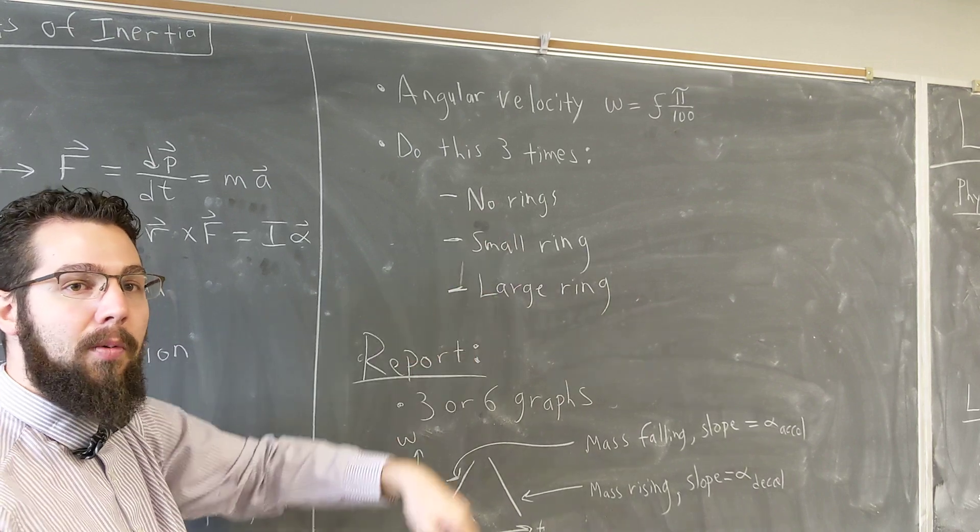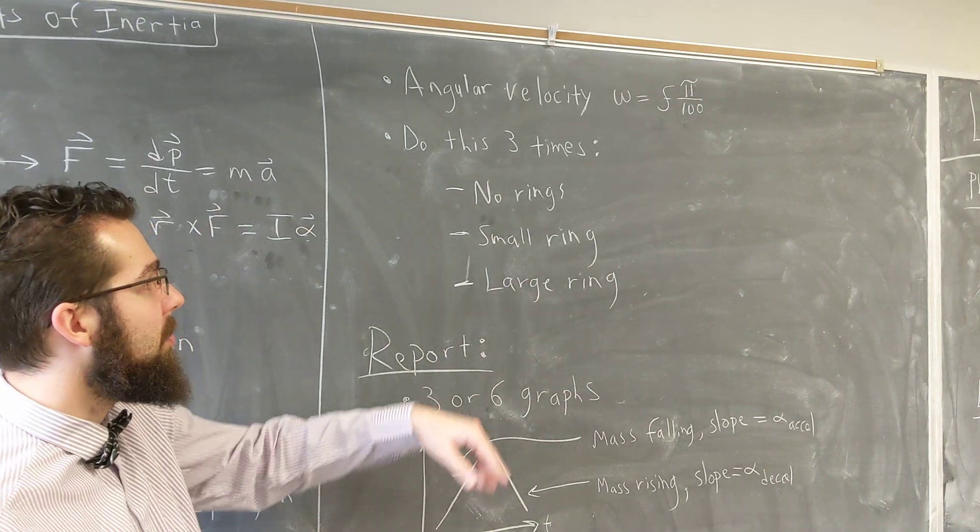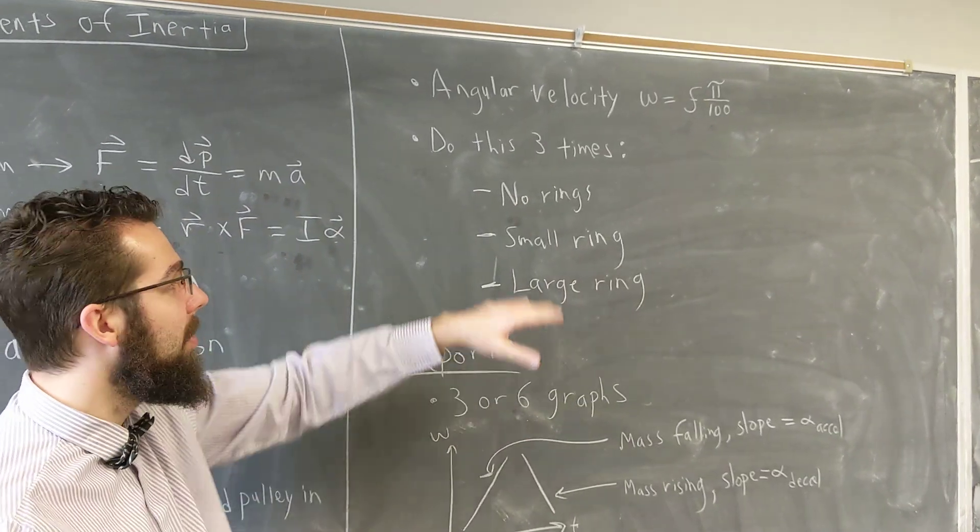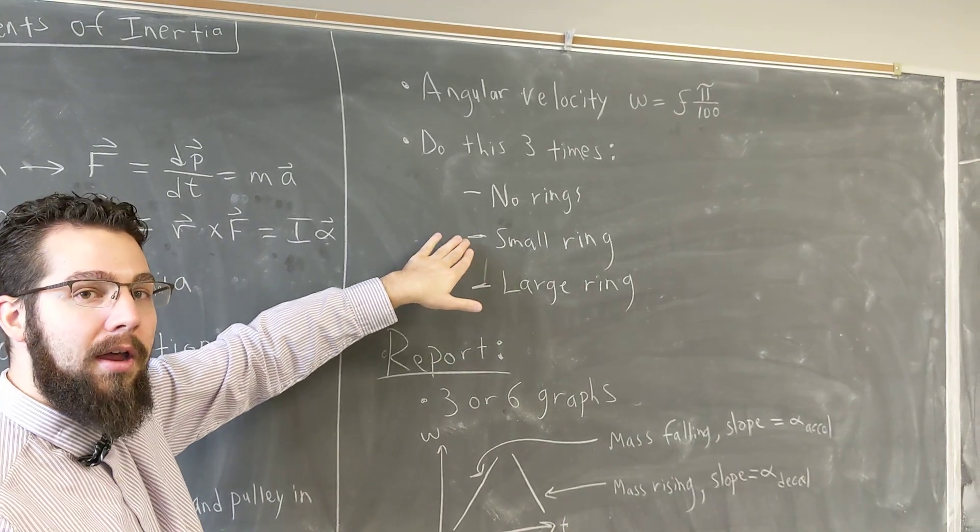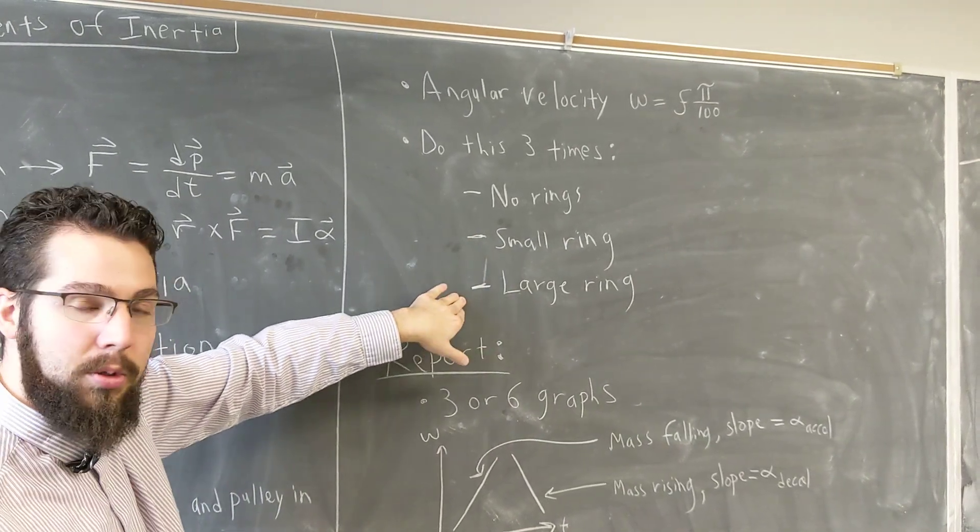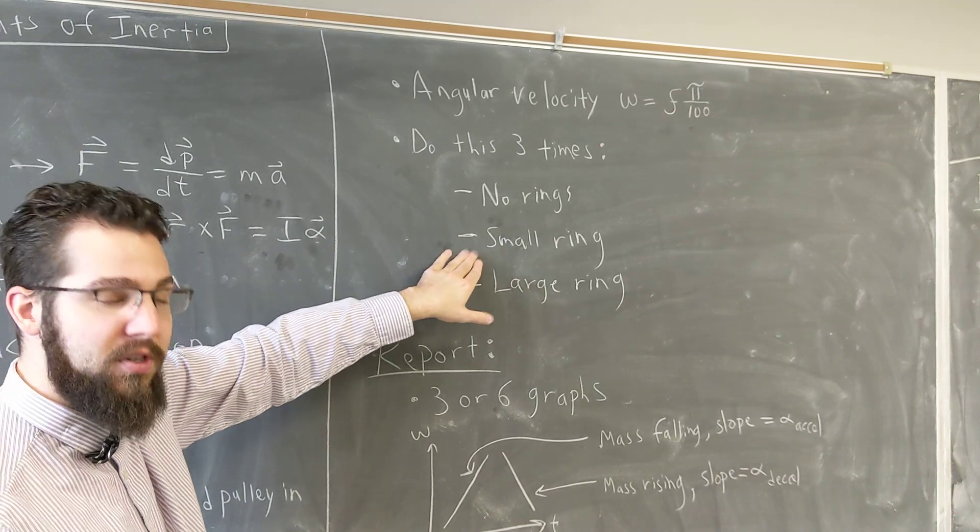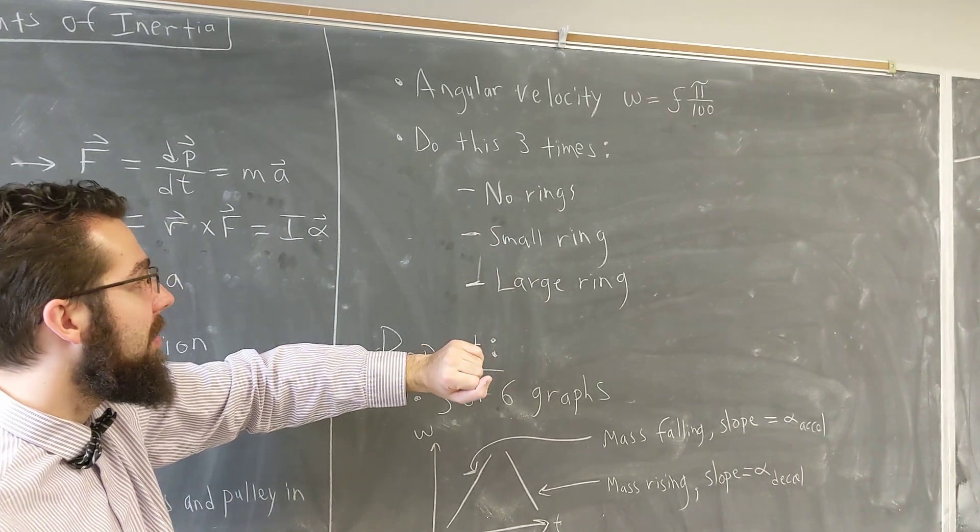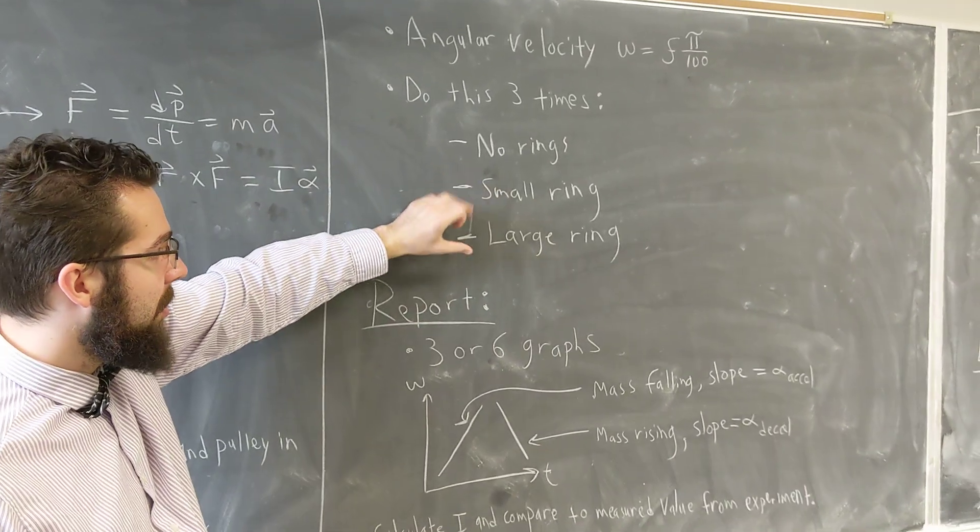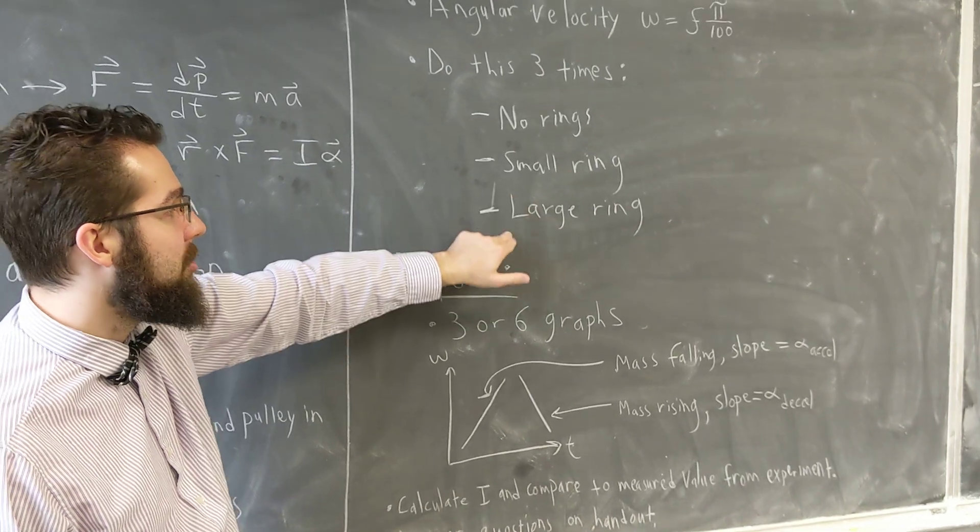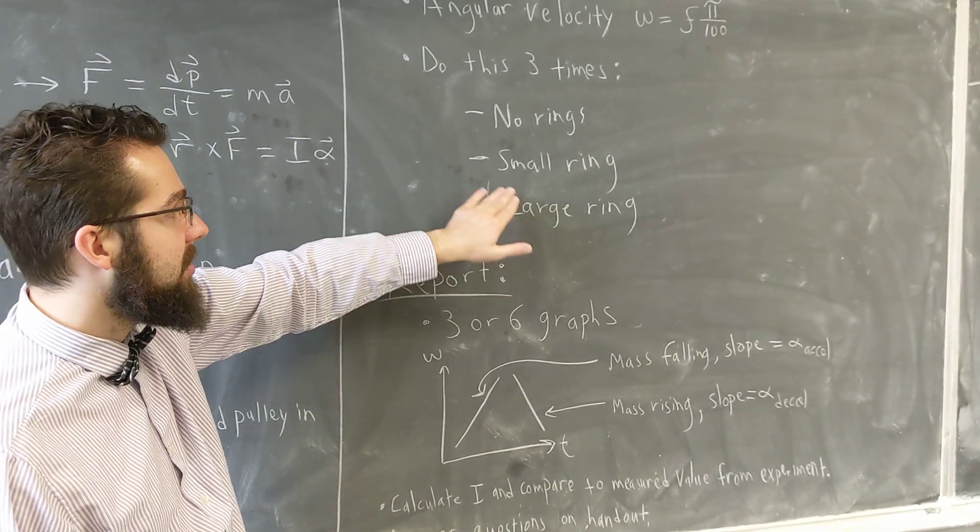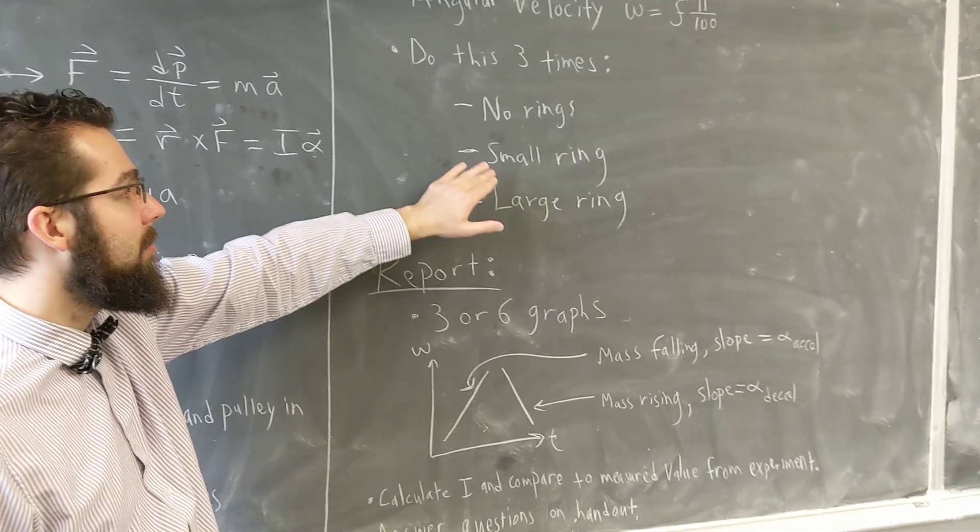We'll repeat this three times: once with the platform with no rings on it so we can calculate the moment of inertia of just the platform, then we'll put a small ring on and do it again, then a large ring. We'll calculate the moments of inertia by hand for each of these with their masses and radii in the lab manual.